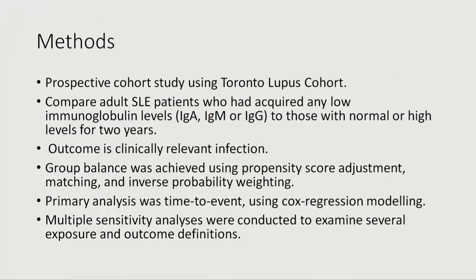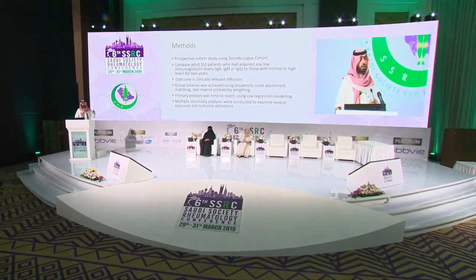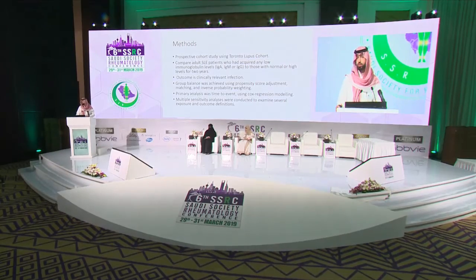The challenge of this study was done on prospectively collected data, so that's a very good quality of data. The problem is there are a lot of confounders that can cause low immunoglobulin in patients with lupus that also can contribute to infection. In order to overcome this, we did a lot of methodological statistical techniques to account for that. The outcome of interest is clinically relevant infection, which means any infection that requires any antibiotic, whether oral or IV — the one that you care about as a clinician and rheumatologist.